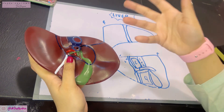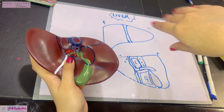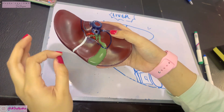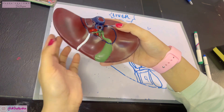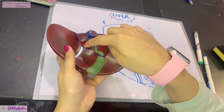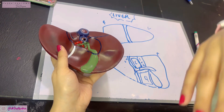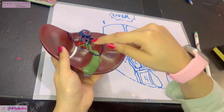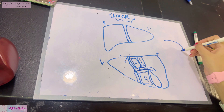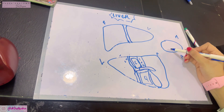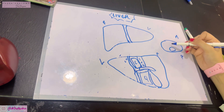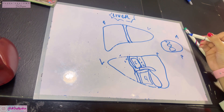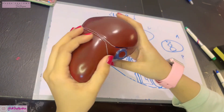The porta hepatis is a five-centimeter-deep transverse fissure — a gap where structures enter and exit the liver. The structures that enter the liver include the portal vein, the hepatic artery, and the hepatic plexuses of nerves. The structures that leave the liver are the hepatic ducts and lymphatics. Within the porta hepatis, from posterior to anterior: most posteriorly lies the portal vein, anterior to that is the hepatic artery, and most anteriorly are the hepatic ducts.